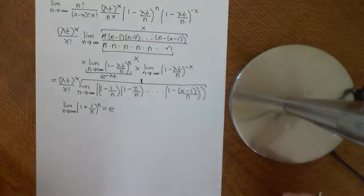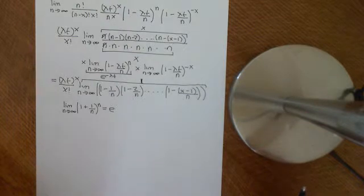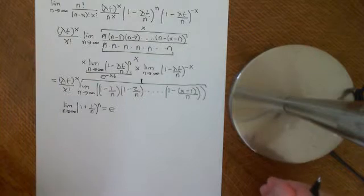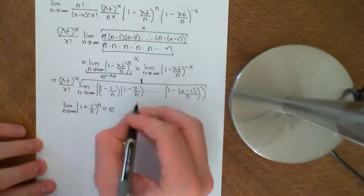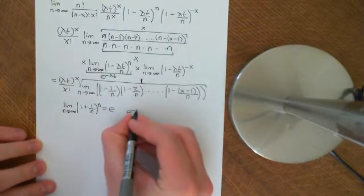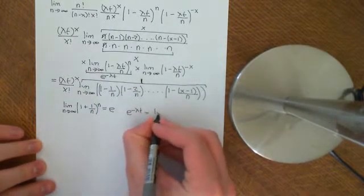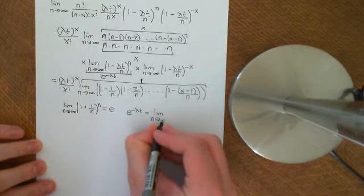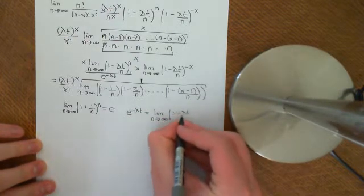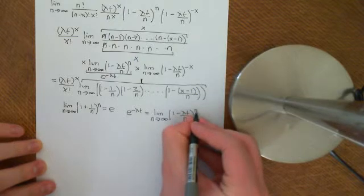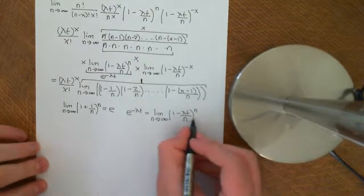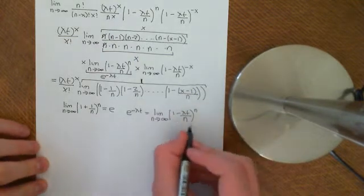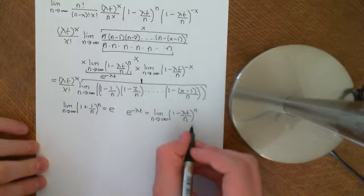Welcome back to this video on the Poisson process, where we are trying to derive the Poisson distribution probability mass function from the probability mass function for the binomial distribution. I want to show you that e to the negative lambda t is equal to the limit as n approaches infinity of 1 minus lambda t over n to the power of n. And I will show you this from the definition of differentiation.